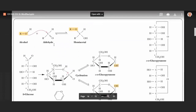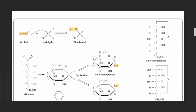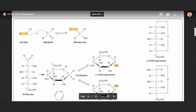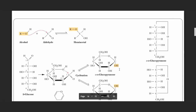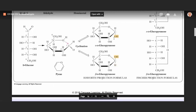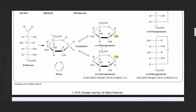Let's see how cyclization occurs. In an organic chemistry reaction between an alcohol and an aldehyde, a hemiacetal forms. If the two functional groups are on the same molecule — for example, a reaction between carbon 1 and the OH group of carbon 5 — the oxygen acts as a nucleophile and attacks the carbonyl carbon. Since there is free rotation around the aldehyde group, two possibilities exist: OH can be down when cyclization occurs, giving alpha-D-glucose, or OH can be up, giving beta-D-glucose.